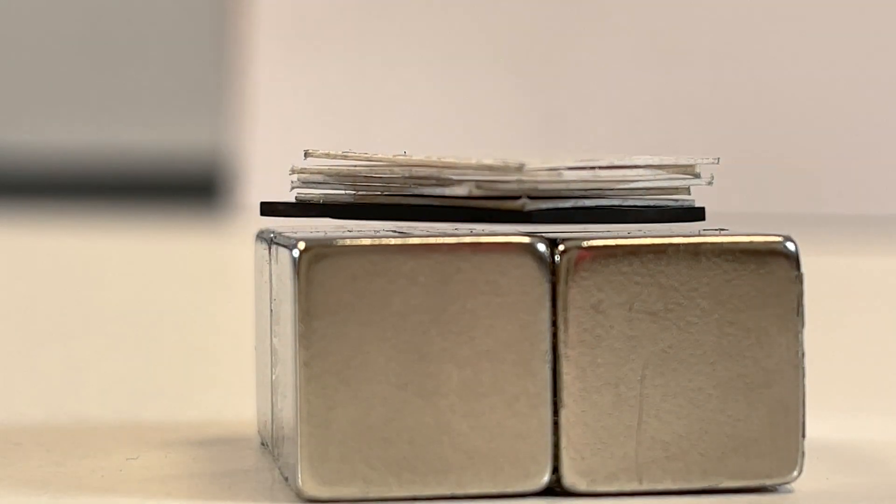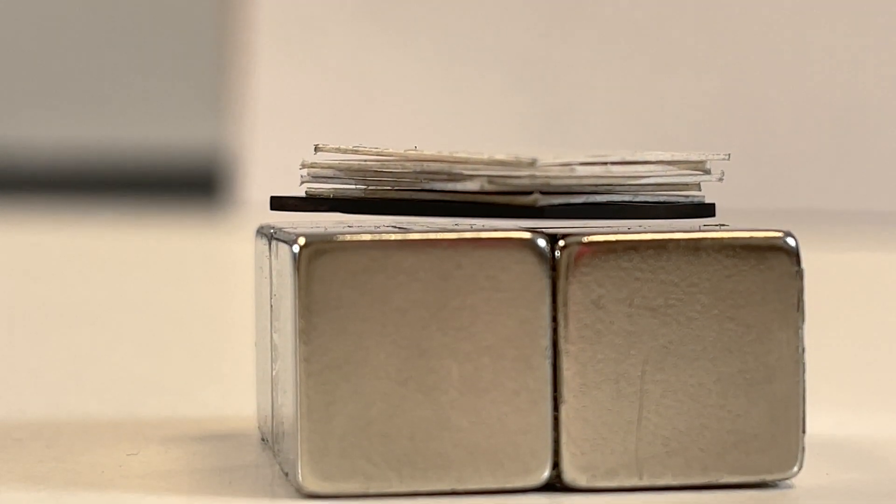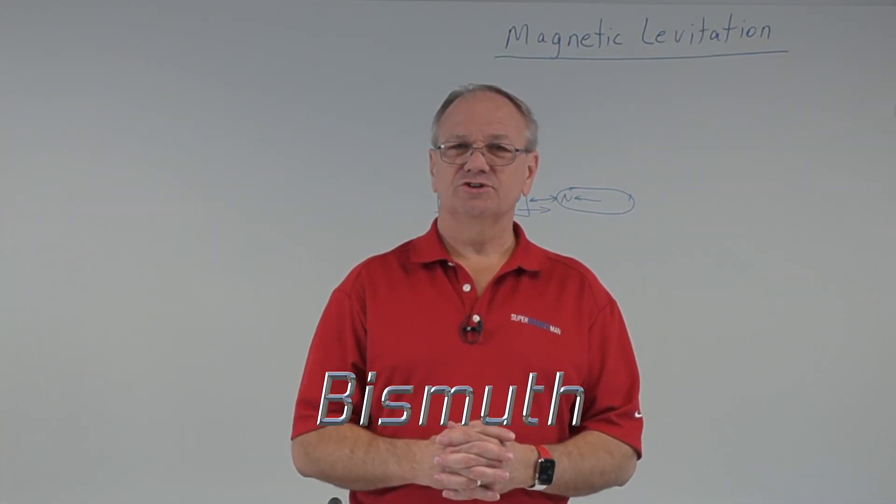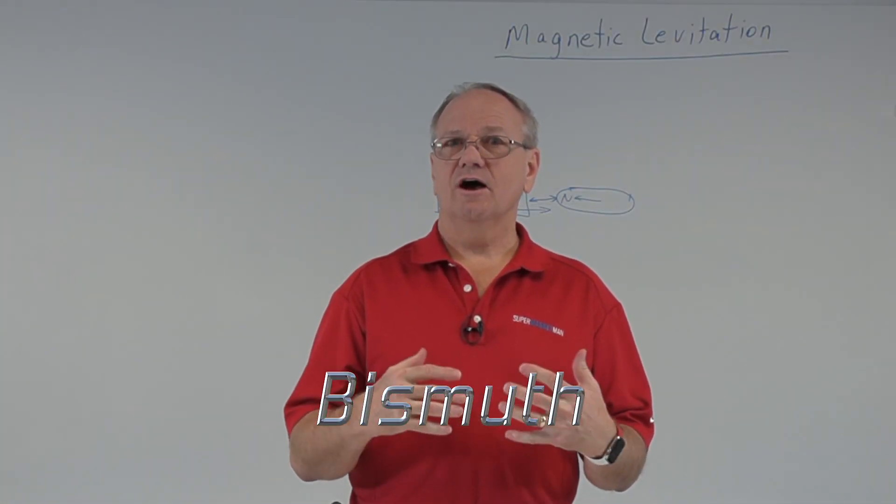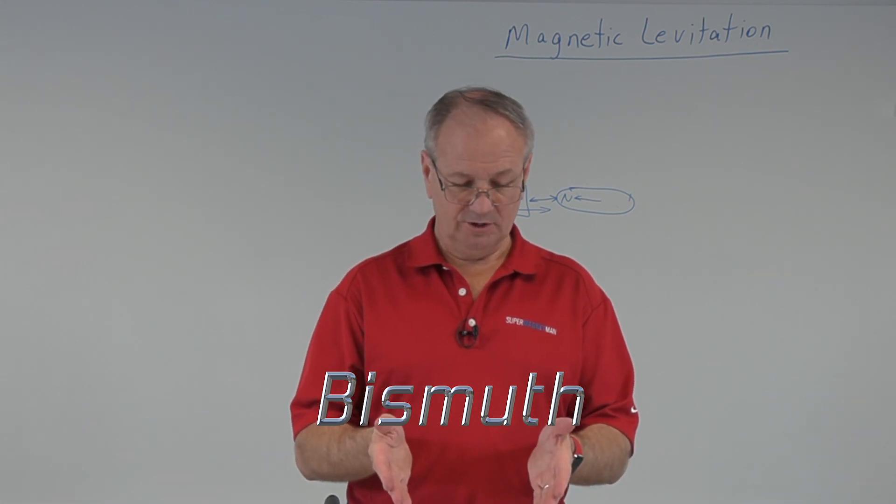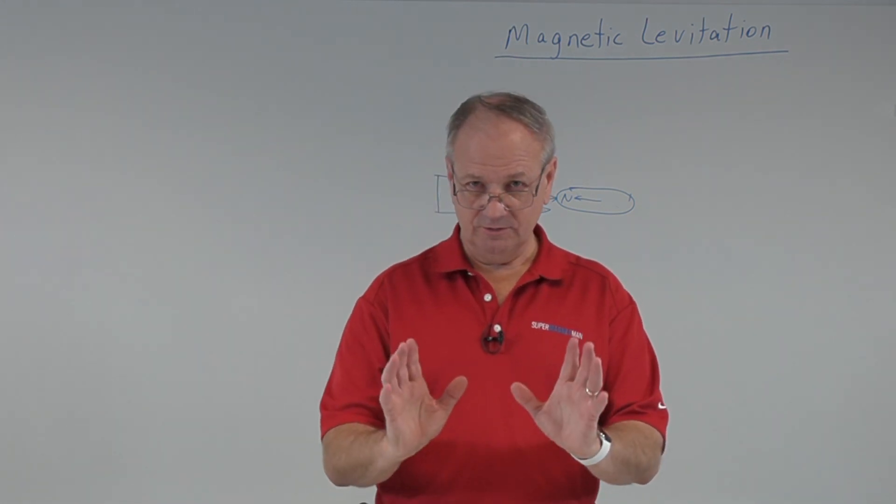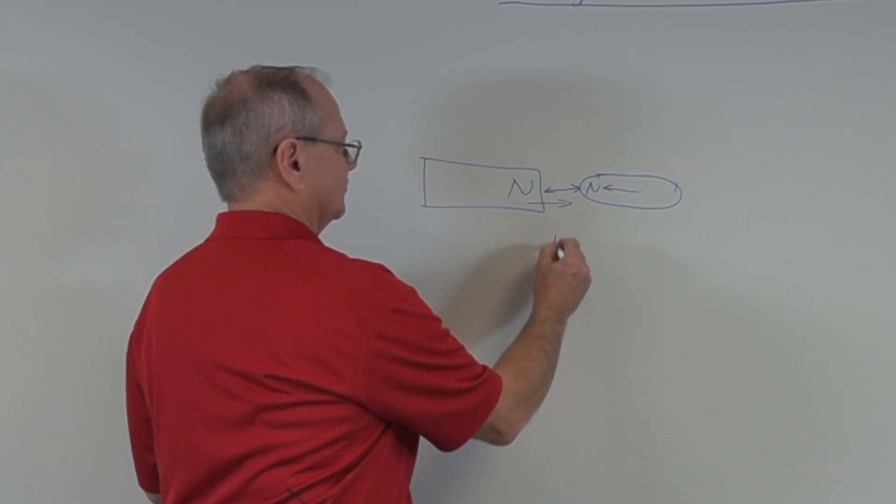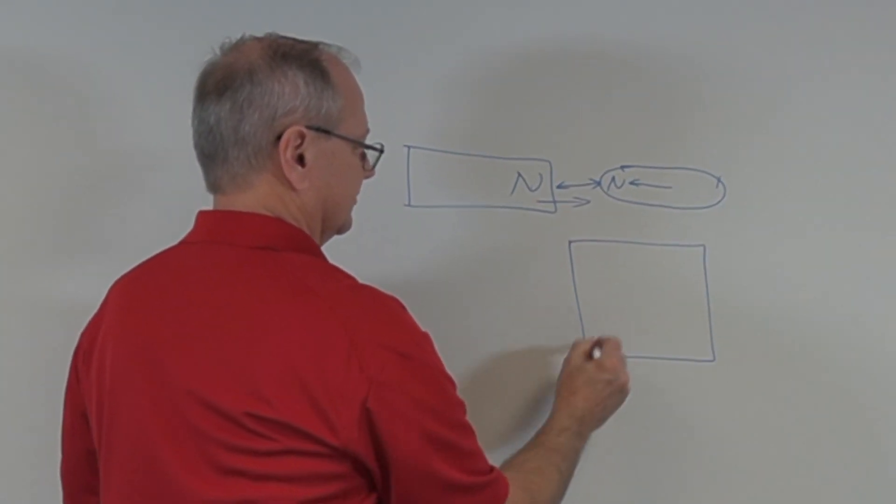So now we've looked at the pyrolytic carbon here. The next one down was bismuth, but bismuth offers us some very interesting options that we don't have with the pyrolytic graphite. The one thing, keep this in mind, with the pyrolytic carbon, the magnets have to be arranged like this.